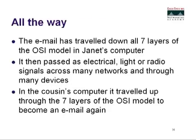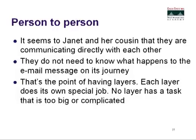The email has traveled down all seven layers of the OSI model on Janet's computer, passed as electrical, light, or radio signals across many networks and through many devices, and then traveled back up through all seven layers of the OSI model on the cousin's computer to become an email again. To Janet and her cousin, it seems like they are communicating directly. They don't need to know what happens along the way — just know what the OSI model is about, how it's used, the different layers, and that it ensures delivery of packets between unlike systems.